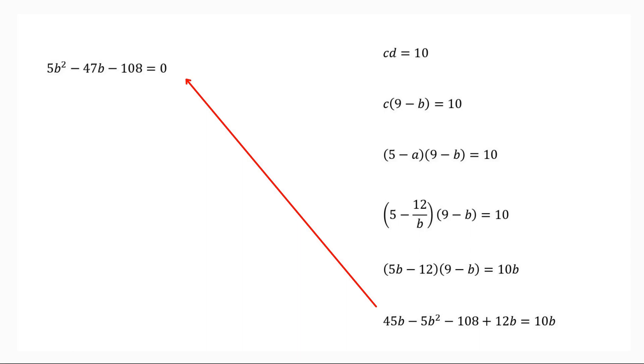This is a quadratic equation. So we can apply quadratic formula. Then B equals 47 plus or minus square root of minus 47 whole square minus 4 into 5 into 108 whole divided by 2 into 5.